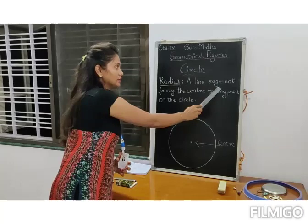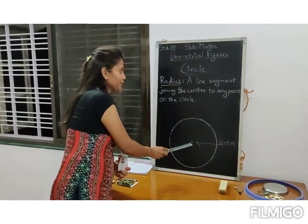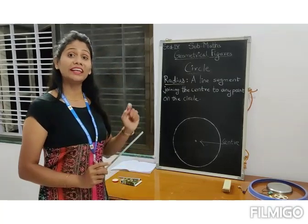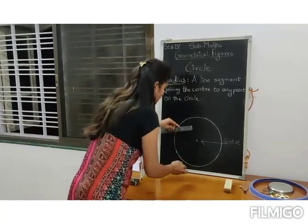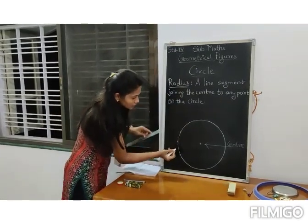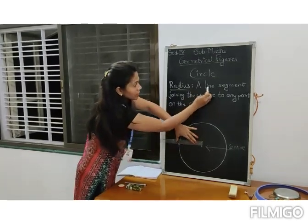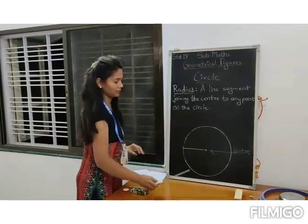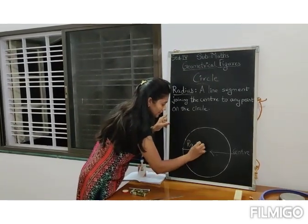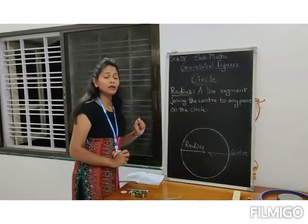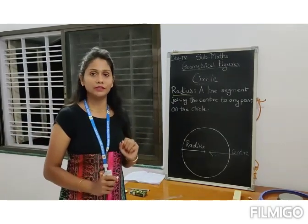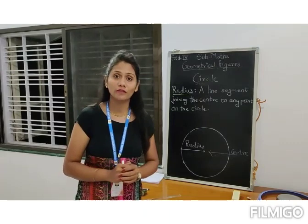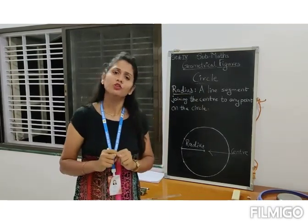Radius: a line segment joining the center to any point on the circle. I will draw the radius on the circle — a line segment joining the center and a point on the circle. This is called radius. We can draw an infinite number of radii, just like the spokes on a bicycle wheel, or the Ashok Chakra on the flag which has twenty-four lines — those are also radii, joining from the center to points on the circle.